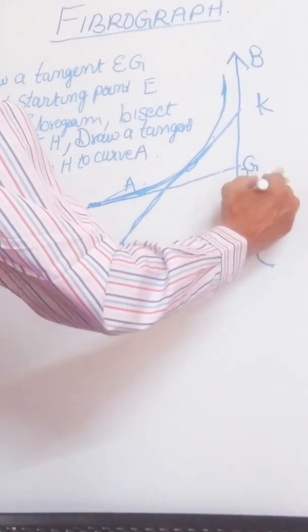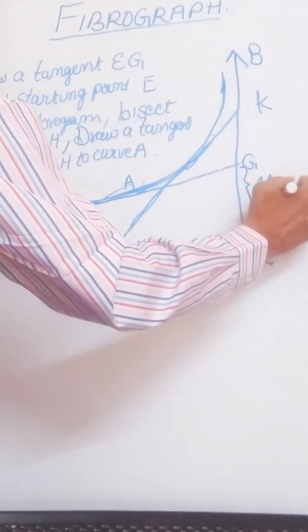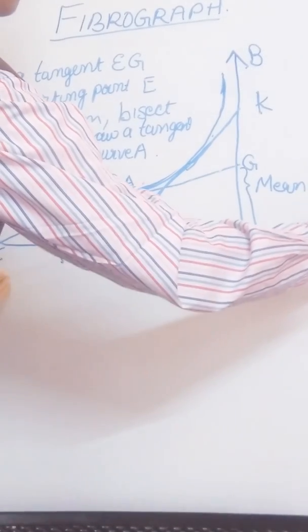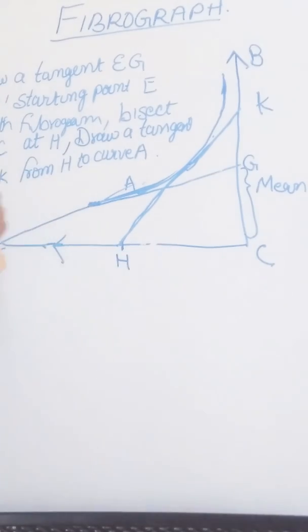Now this is called the mean length. CG is the mean length.